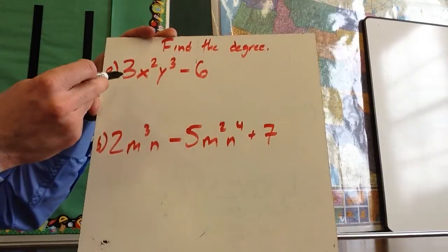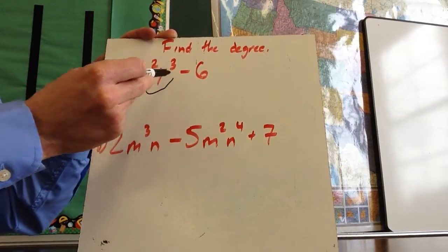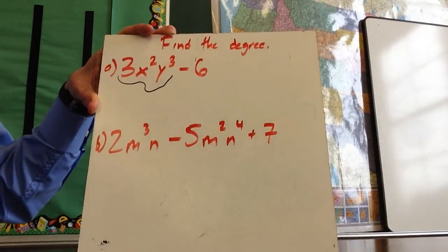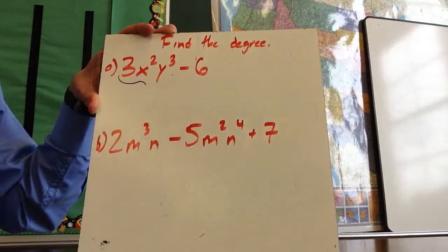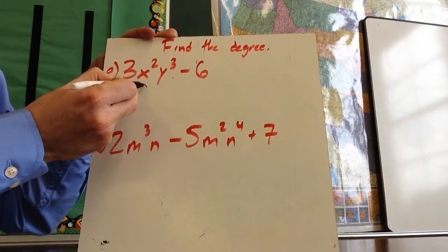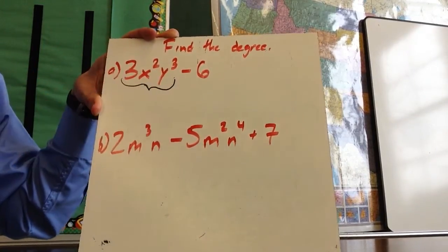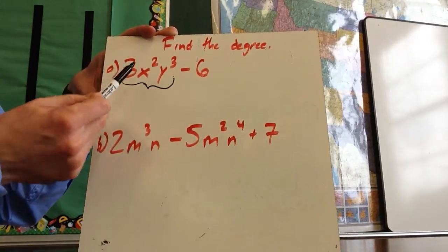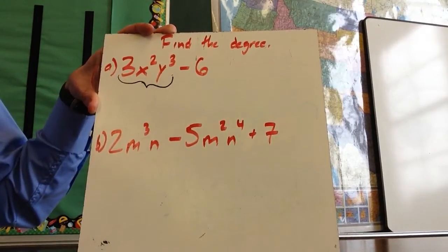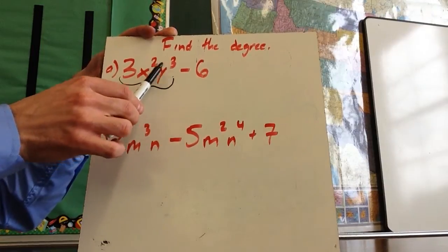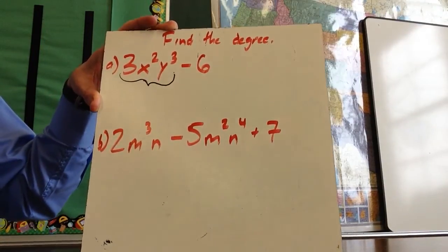So this polynomial, we're looking just at this part. Sorry, that's not what I was trying to draw. We're looking just at this part. That looks better. So I'm 3x squared, y to the third. I'm looking at these exponents.